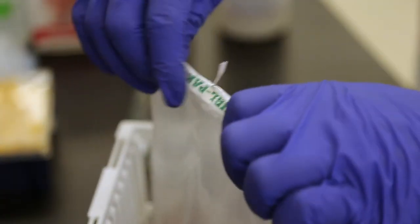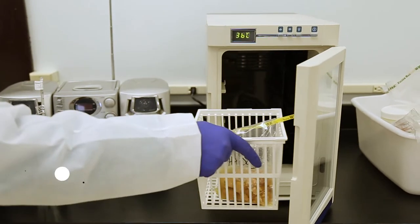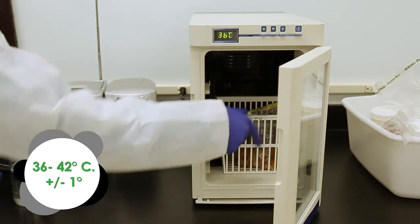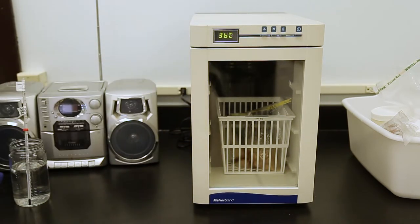Fold the stomacher bag several times, then fold the tabs in. Incubate at 36 to 42 degrees Celsius, plus or minus 1 degree, for the listed amount of time as found in the kit insert.